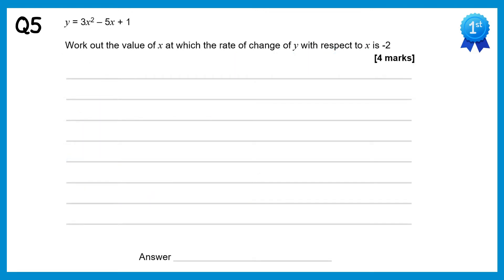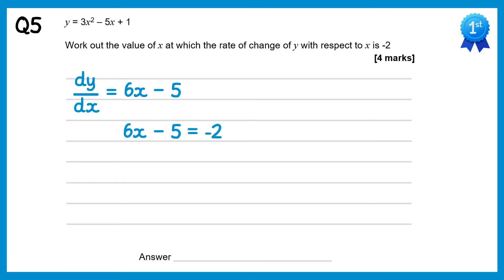For this question we need to work out the x value when the rate of change of y with respect to x is equal to negative 2. The rate of change of y with respect to x is just another way of saying dy/dx. So dy/dx: 3x squared differentiates to give 6x, minus 5x gives minus 5, and the plus 1 constant term gives 0. Setting this equal to negative 2: 6x minus 5 equals negative 2. Adding 5 to both sides gives 6x equals 3, then dividing by 6 gives x equals 1 half.